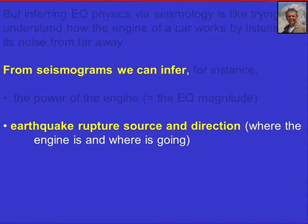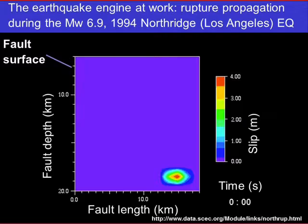From seismograms we can infer quite a lot of information — not only the magnitude, or the power of the earthquake engine — but also information about the rupture source, including the direction of rupture propagation: where the engine is and, in a sense, where the rupture is going.